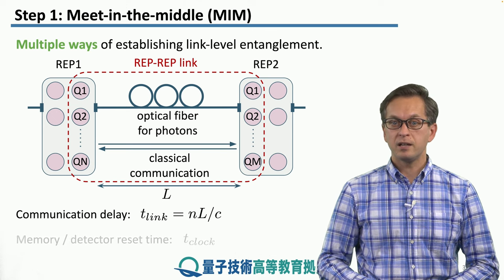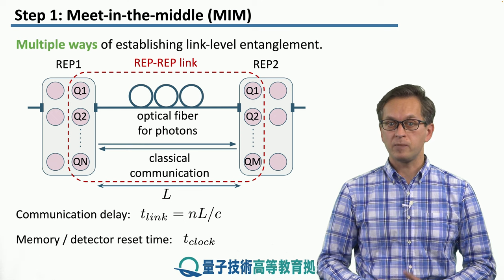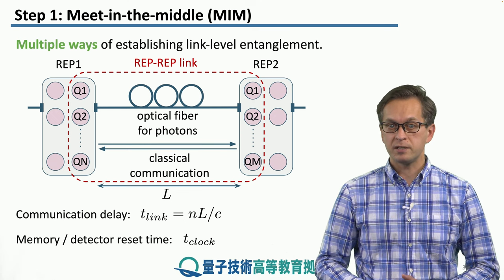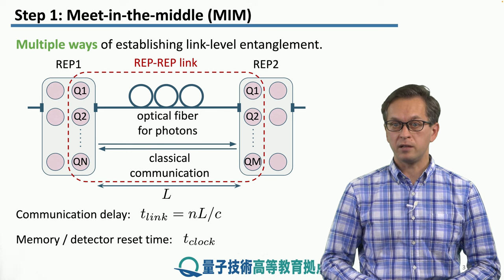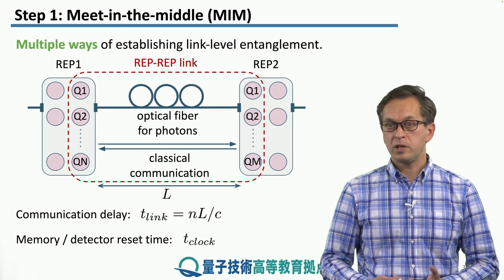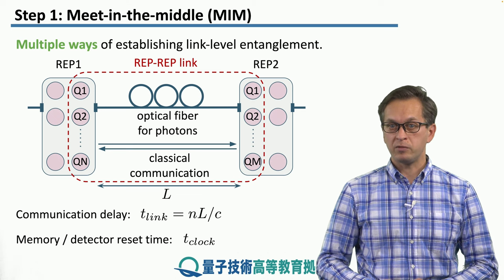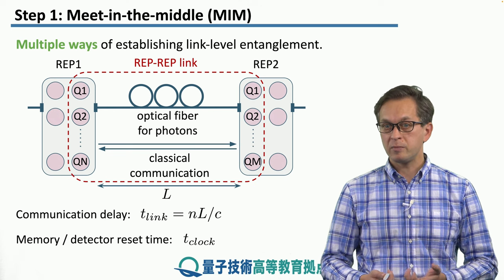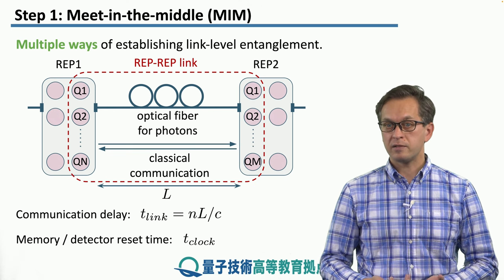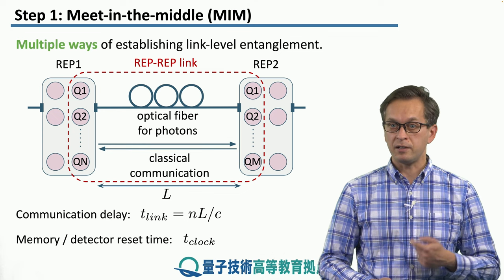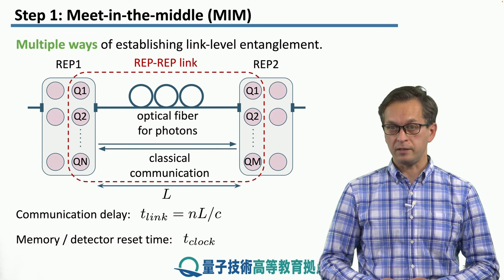The second timescale is T clock, which captures how quickly we can reset our memories or detectors. T clock is given by whichever one is larger, because it takes a finite amount of time to make a memory emit a photon, reset it, and prepare it for another emission. Similarly, it takes a finite amount of time for a detector to have a detection event, then reset and be prepared to detect another photon.